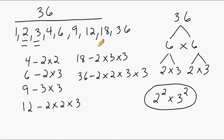So remember, all composite factors of a number can be produced by multiplying a combination of all of its prime factors. And this just means that every composite number can be broken down into all primes.